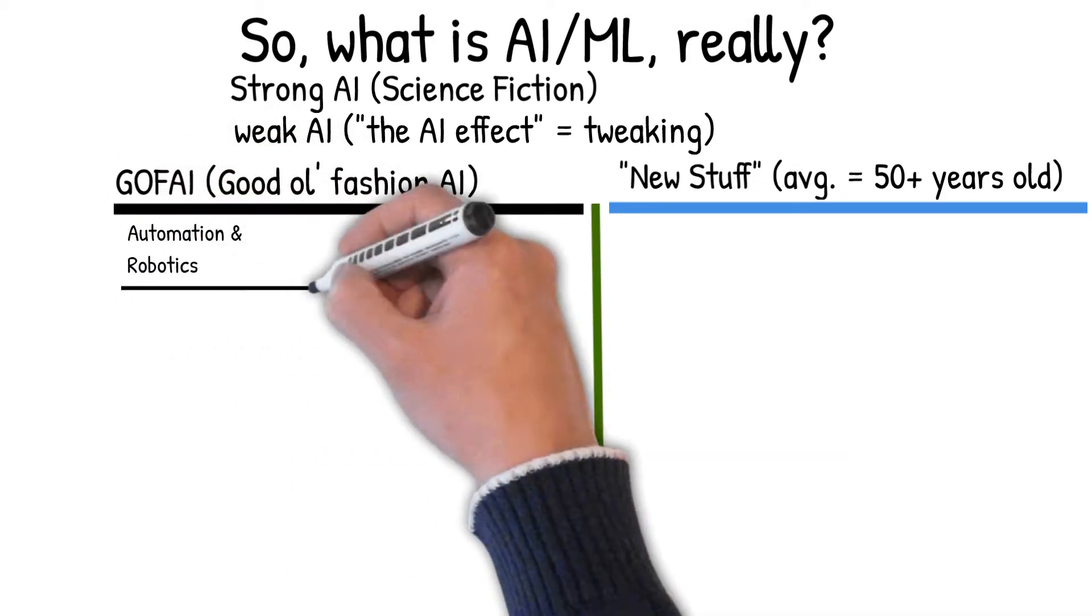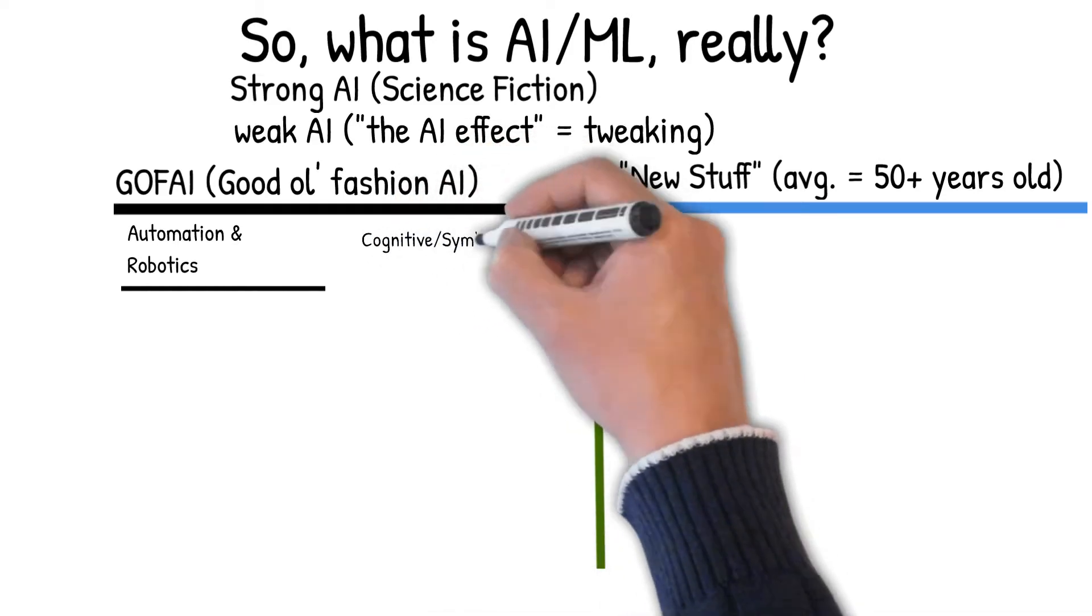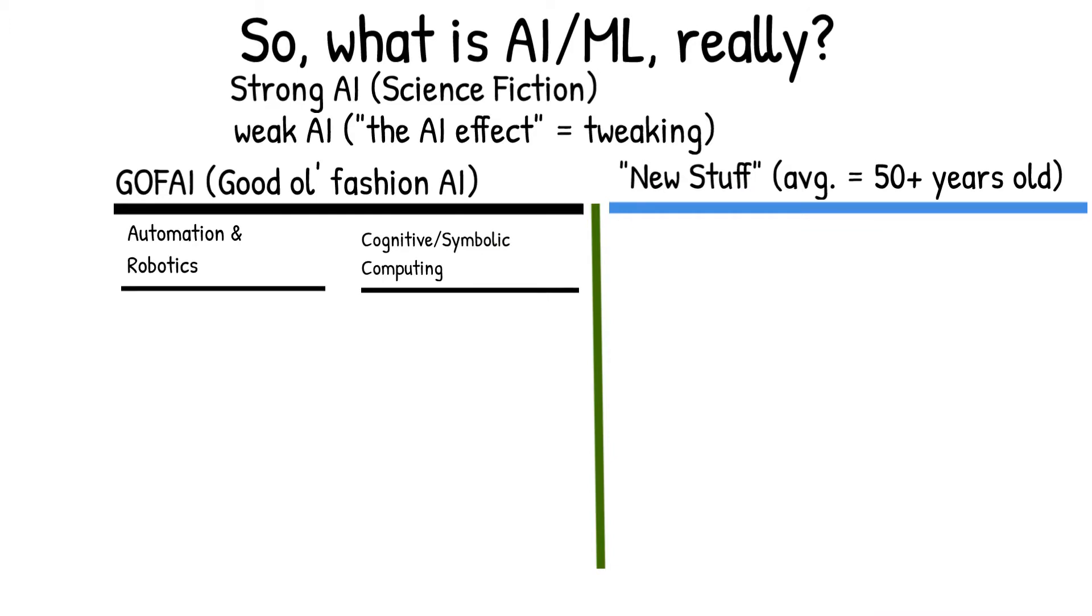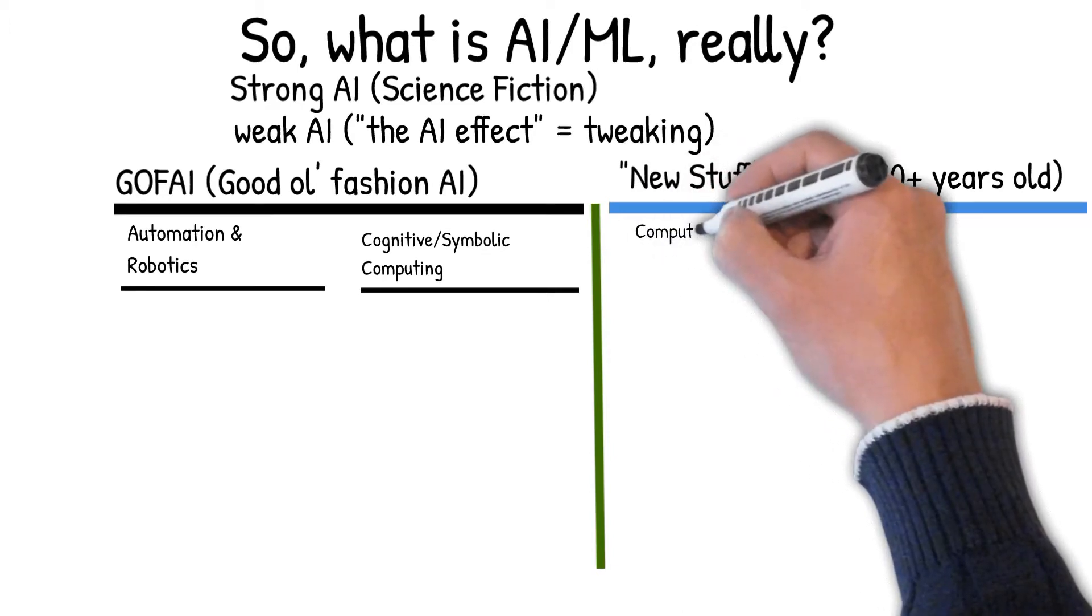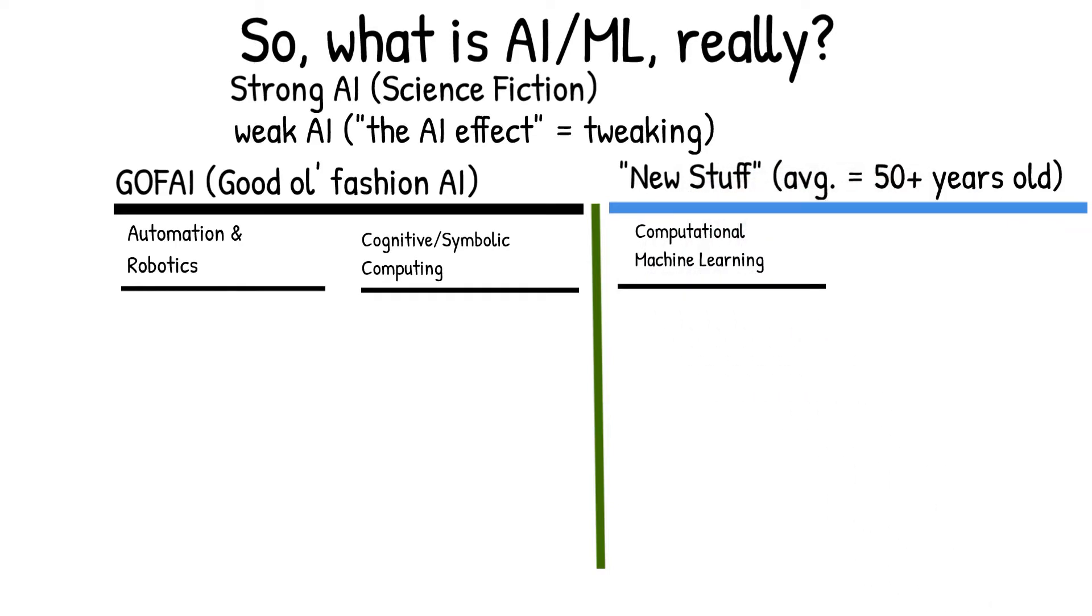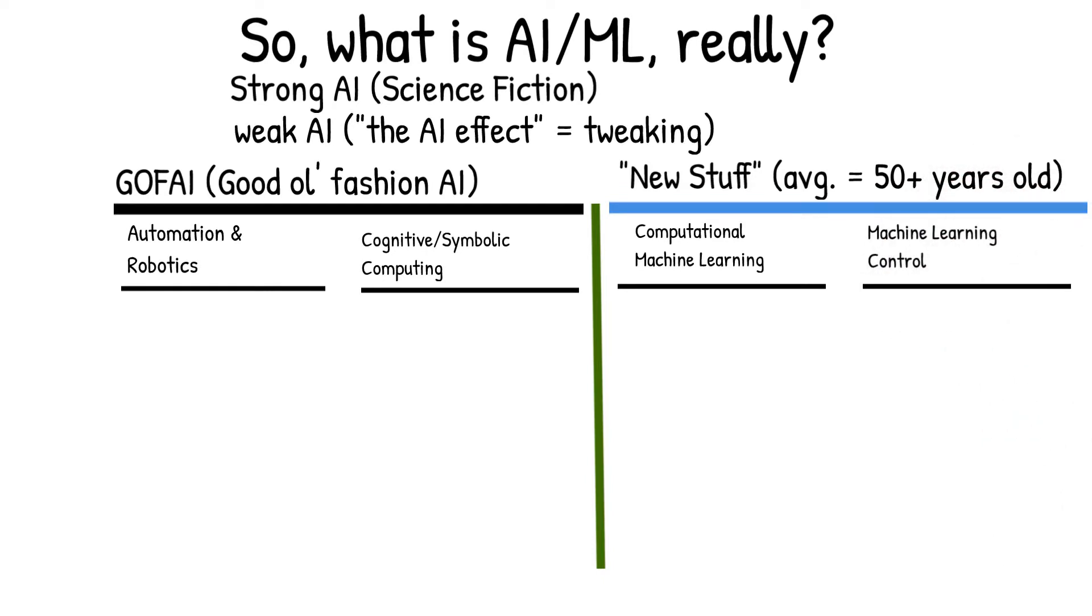Let's go through each branch one at a time. The first one is automation and robotics. The second branch is more cognitive or symbolic computing, coming up with expert systems and things like that. Then comes the data scientist, computational machine learning. That's what most people talk about in the press today. Finally, there's machine learning control, a very old branch of artificial intelligence. This is how planes, for example, go on autopilot, imitating the intelligence of a human pilot.